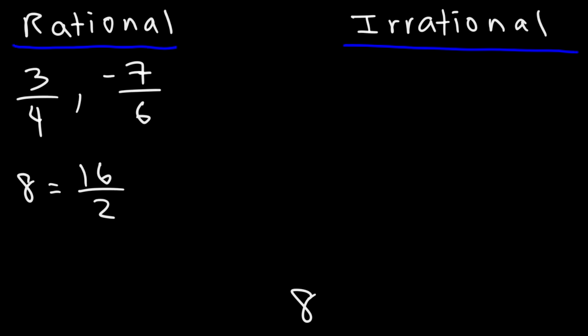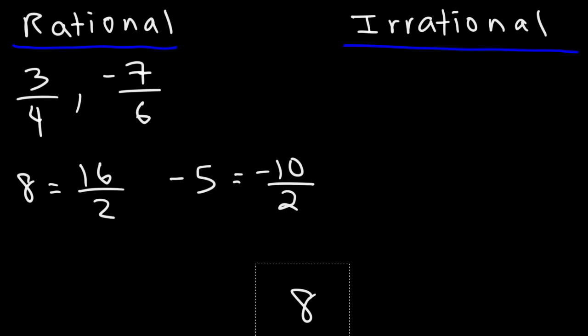What about a negative number like negative 5? Is that a rational number? Negative 5 can be written as a ratio of two integers — you can write it as negative 10 divided by 2. So negative 5 is a rational number. In fact, all integers are rational numbers.